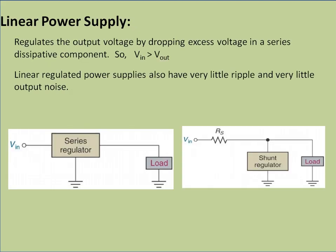Because of this high frequency, the size of the magnetic and filter components is drastically reduced. A linear power supply regulates the output voltage by dropping the excess voltage across the series dissipative component. The input voltage of the linear power supply should always be greater than the output voltage, and any excess voltage is dropped across this linear control element. The linear power supply has the advantage of very little ripple and very little output noise compared to SMPS.